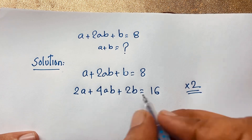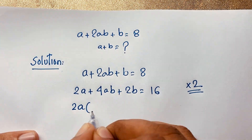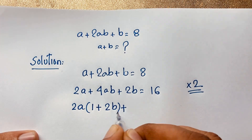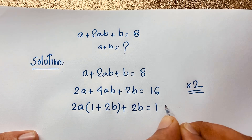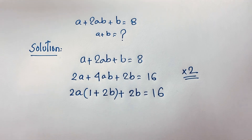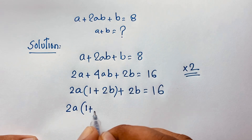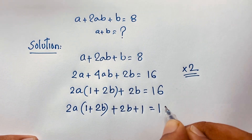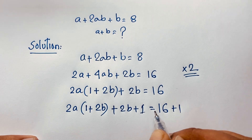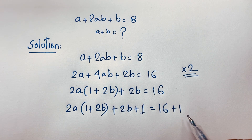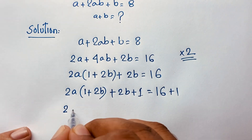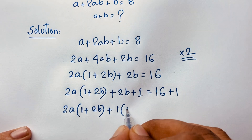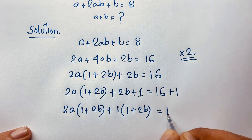Now you can see here 2A is common. So taking 2A common, it will be 2A times (1 plus 2B), and here plus 2B is equal to 16. Then adding 1 to both sides: 2A times (1 plus 2B) plus (1 plus 2B) is equal to 17.